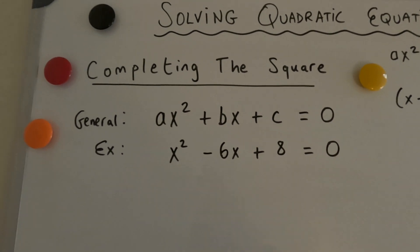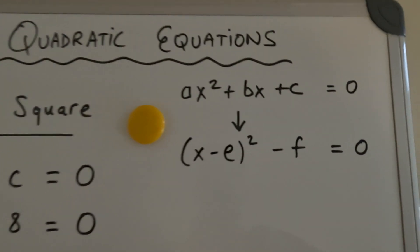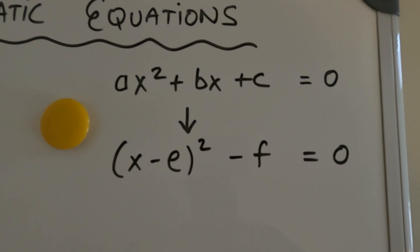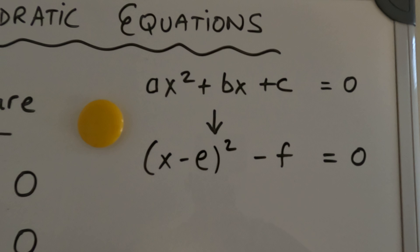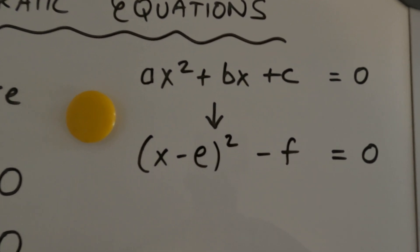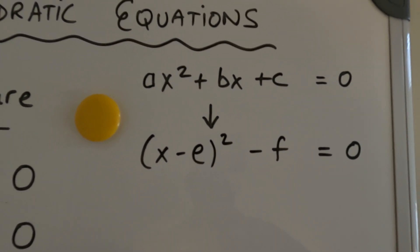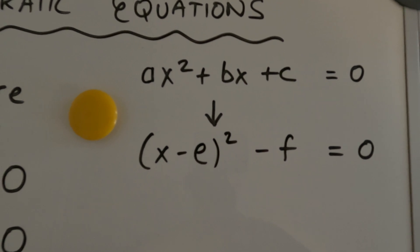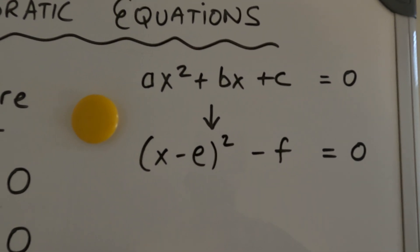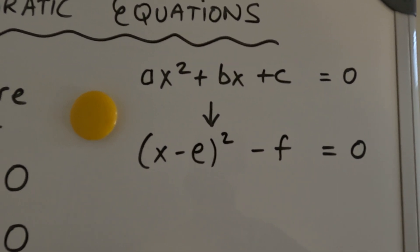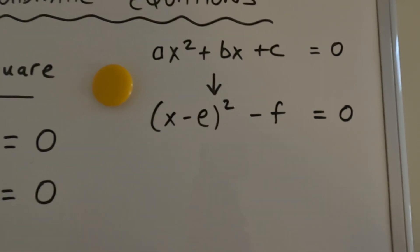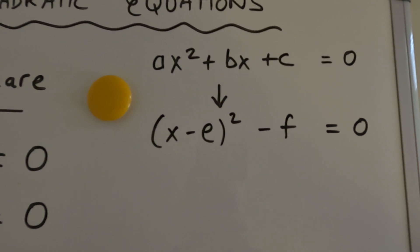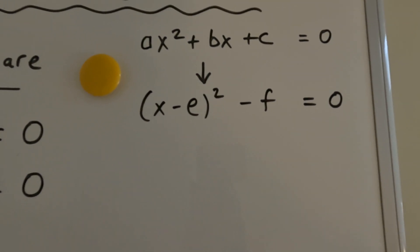Now, what does completing the square do? Well, let's have a look over here. So the general form for quadratic is ax squared plus bx plus c equals zero. So by completing the square, what we're doing is we're transforming it into this form here, x minus e all squared minus f equals zero. So it's just a matter of finding e and f. And then once we have that in that form, we can solve pretty quickly for x.